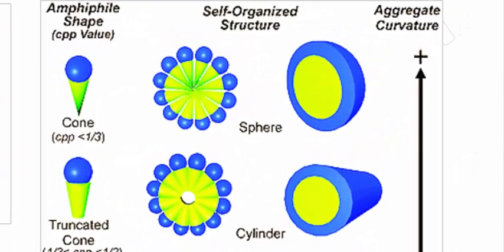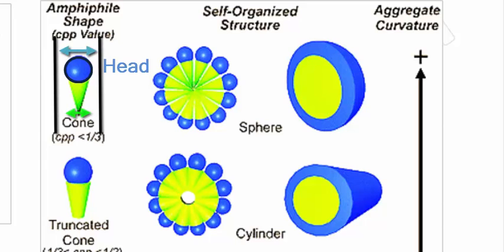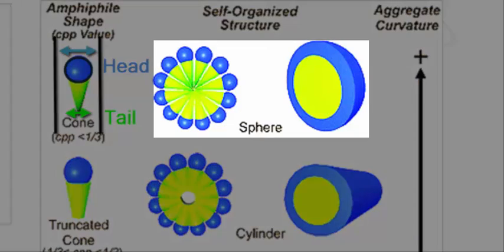When a micelle forms, the head of the phospholipid will have a cross-sectional area that is greater than that of the tail. And when that happens, a spherical structure is what is going to result.